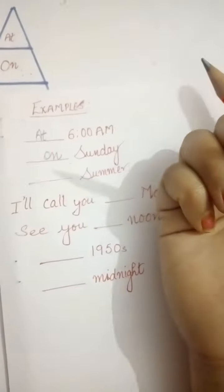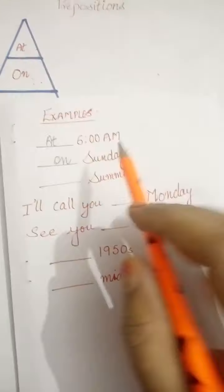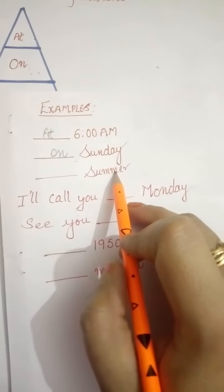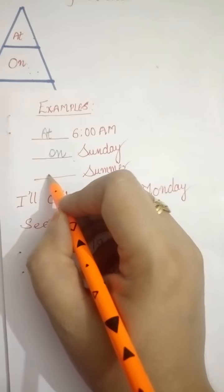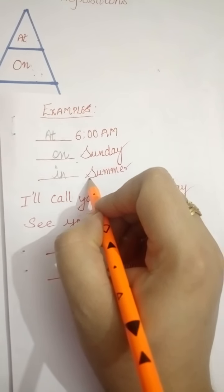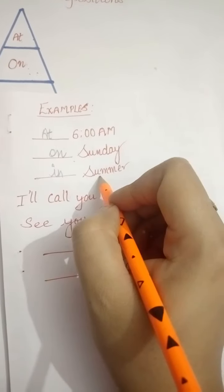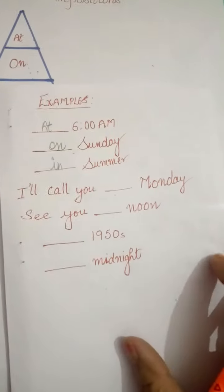Or, also for one date we use the preposition on. Now, dash summer. In summer. Because summer is a long period of time, so we use the preposition in for long periods of time.